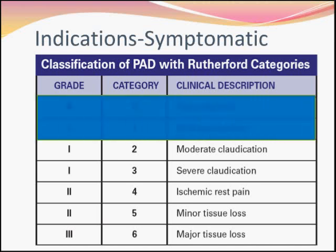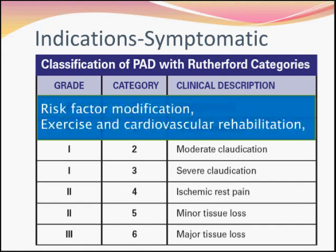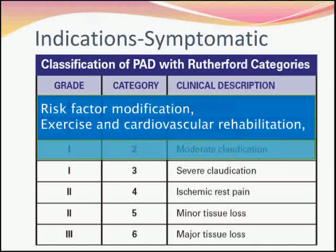For category 1, you would ask the patient to change his lifestyle — to stop smoking, control his diabetes, control his hypertension, and control his lipid profile. For moderate claudication (category 2), we would give a drug called Cilostazol, and of course antiplatelet drugs are given to both category 1 and category 2.